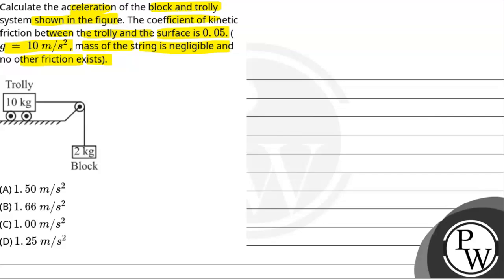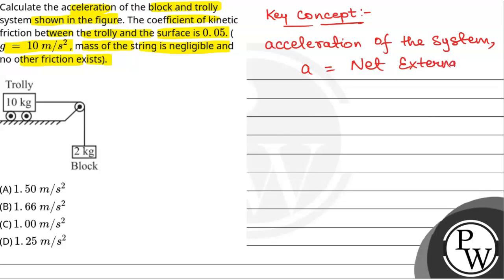We will solve this question. First of all, we will see what will be the key concept used to solve this question. The key concept will be acceleration of the system. Acceleration of the system will be common and that will be a equals net external force on the system by sum of mass, total mass of system.